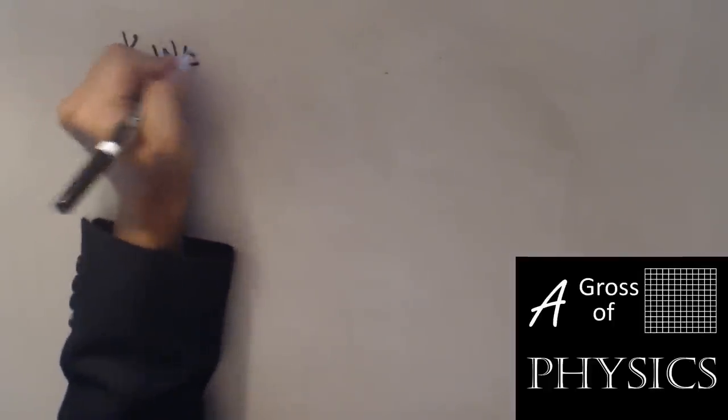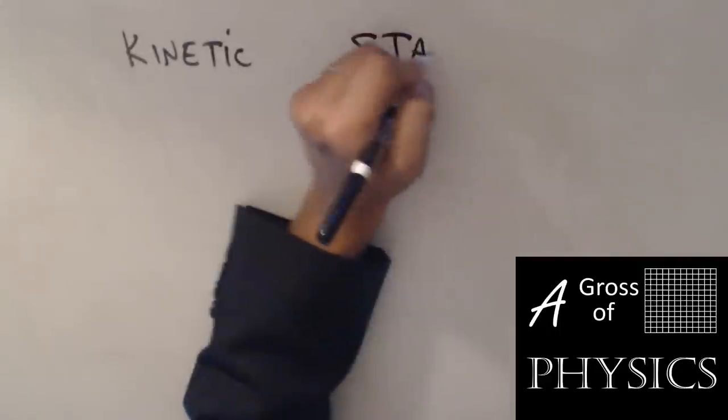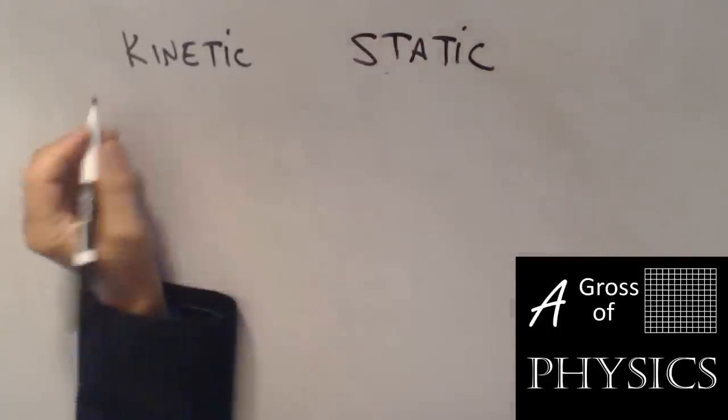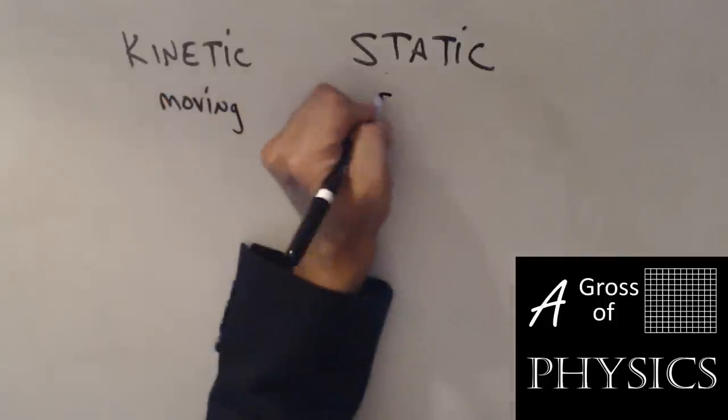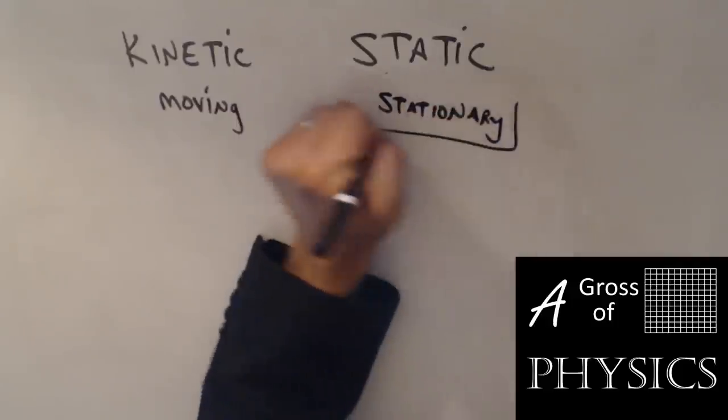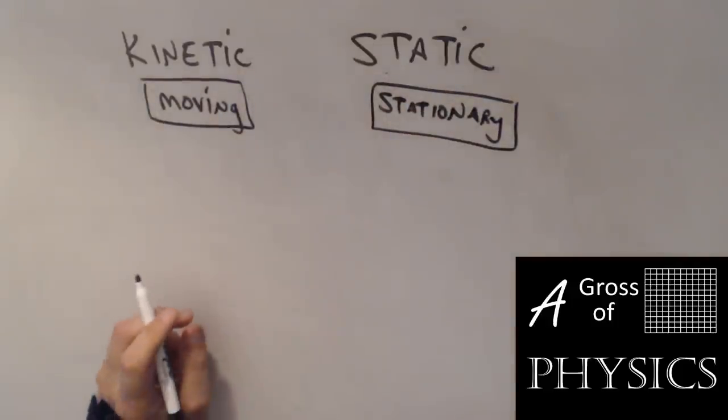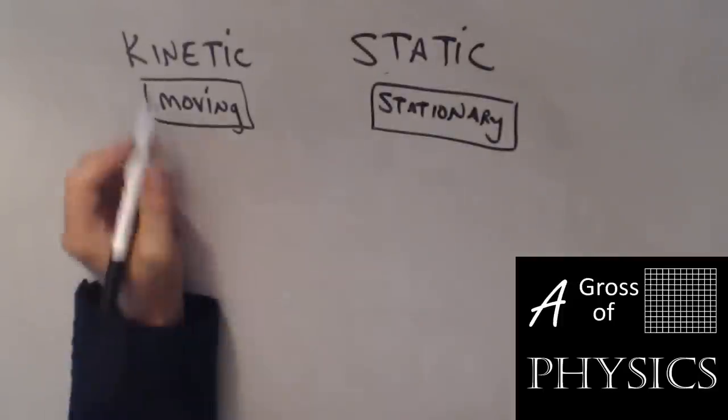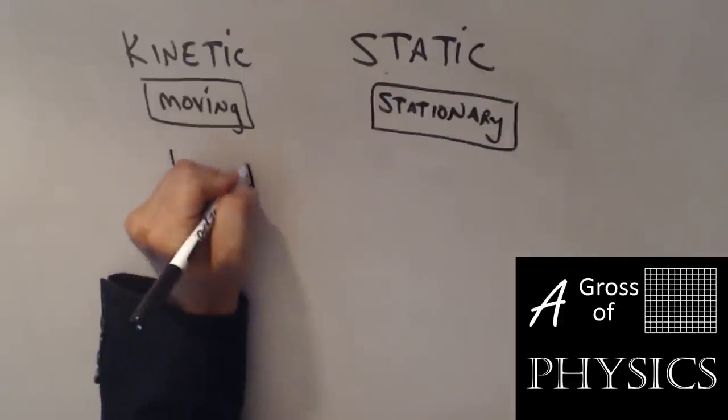Well, the two different types of friction are kinetic and static. So kinetic is moving and static is stationary. You probably talked about kinetic energy in chemistry, and it was the motion of the molecule that contributed to the kinetic energy. So kinetic friction, you have to be moving in order to have that type of friction.